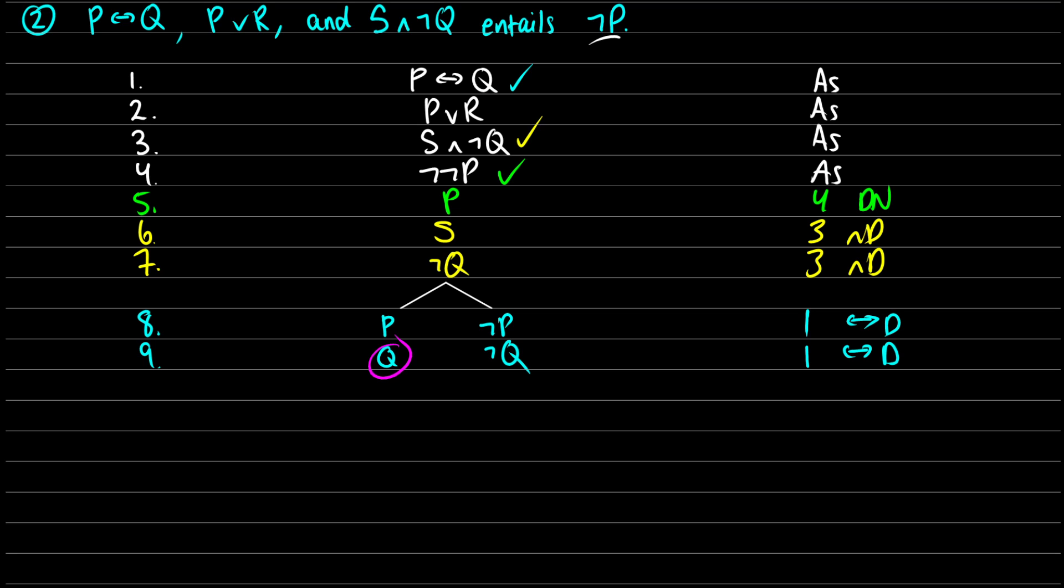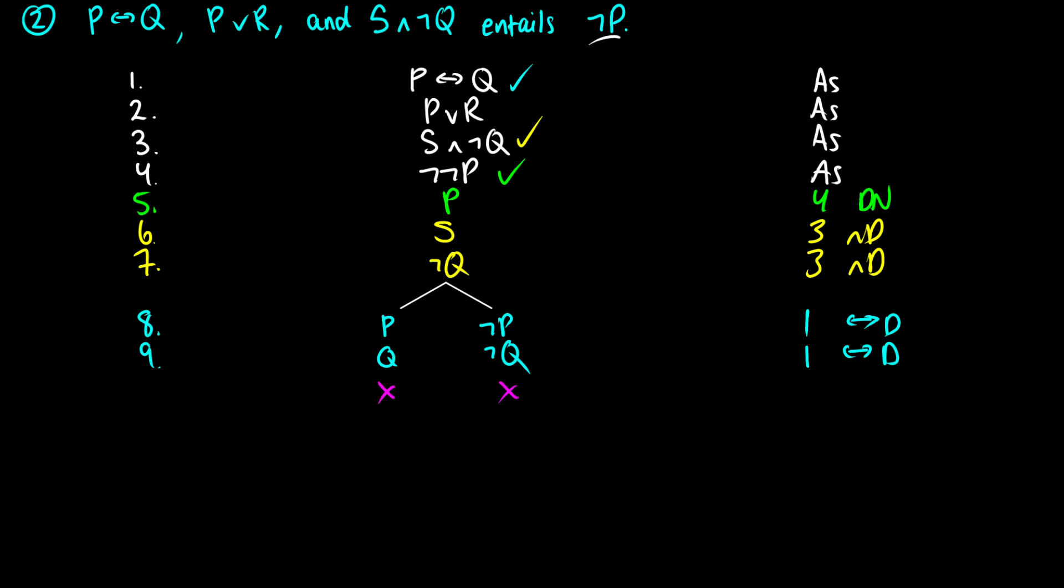We say P↔Q, this means that P and Q have to have the same value. So there's going to be one case where we have P∧Q, and there's going to be another case where we have ¬P∧¬Q. Since those are the two ways that these can have the same value. So this is both the biconditional decomposition from line 1. Now on the left side, we have Q and we have ¬Q. So that is going to close because we have a contradiction. The right side is going to close as well because we have P and we have ¬P. So actually, that's the end of it. We have proven entailment. So the proof is complete. P↔Q, P∨R and S∧¬Q entails ¬P.